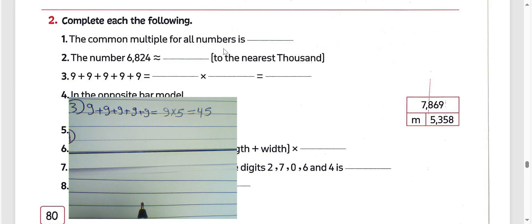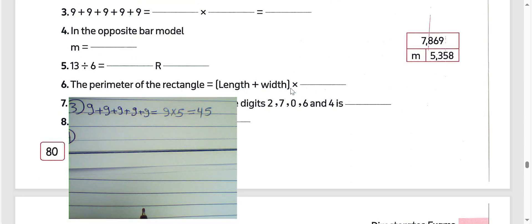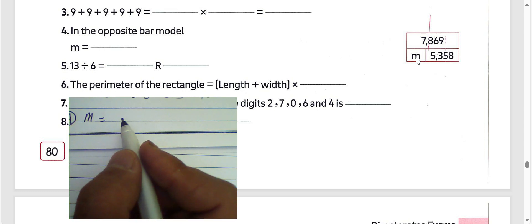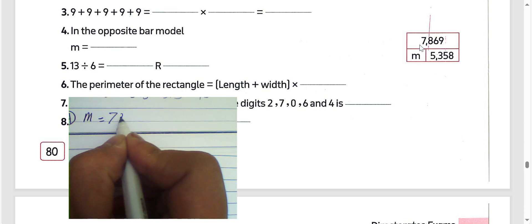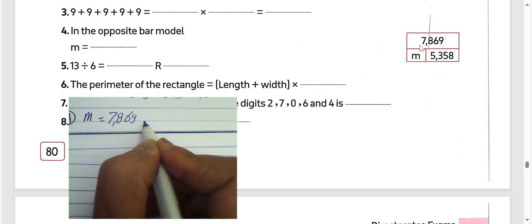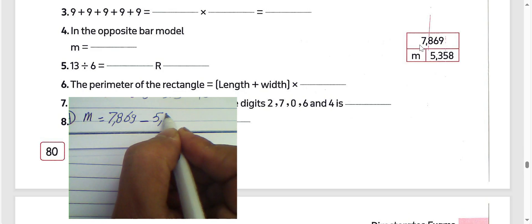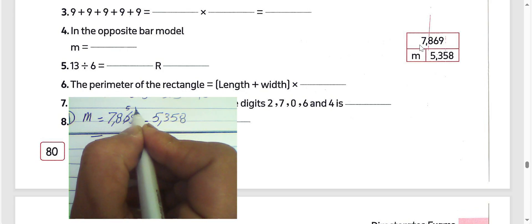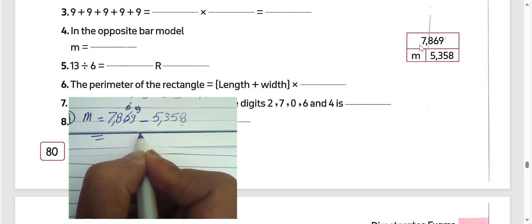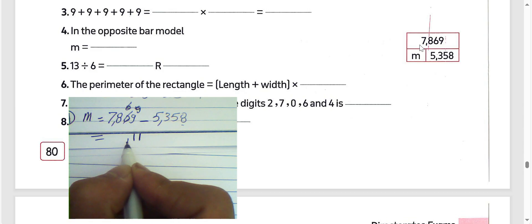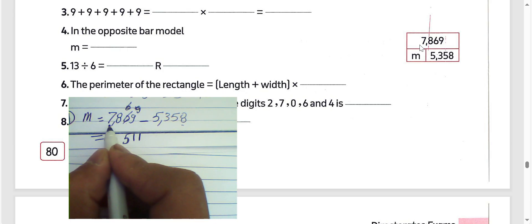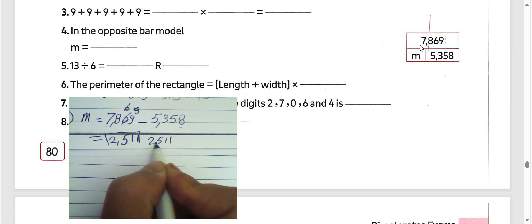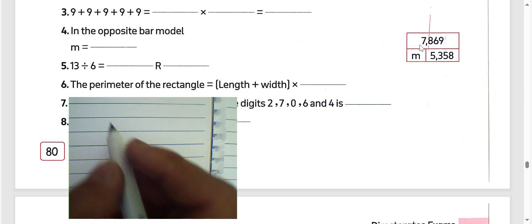Question number 4: in the opposite bar model we want to find the value of m. We can find the difference between two numbers. m equals 7,869 minus 5,358. The difference: 9 minus 8 is 1, 6 minus 5 is 1, 8 minus 3 is 5, 7 minus 5 is 2. The result will be 2,511.